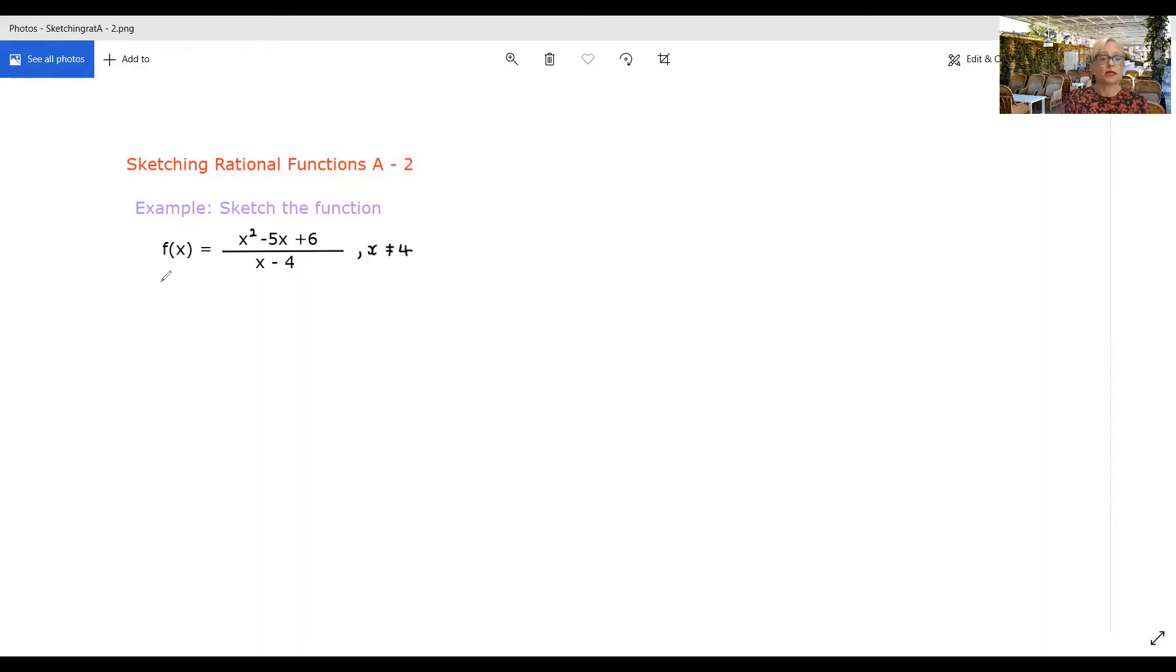So first step, let's just factorise the numerator of this. This is a nice easy one to factorise. We just get x minus 2, x minus 3, all over our x minus 4.